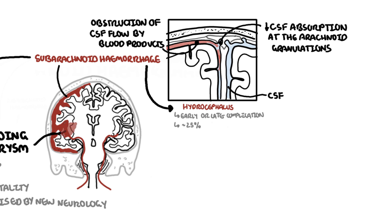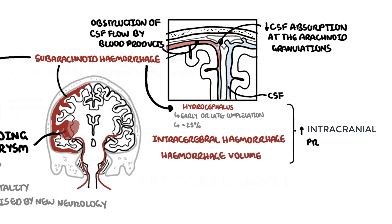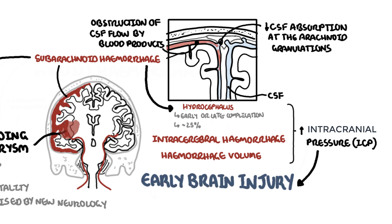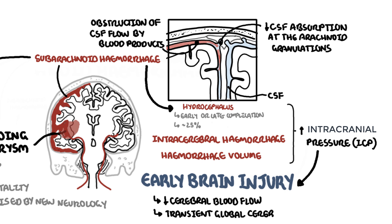Other immediate complications include intracerebral hemorrhage, and depending on the hemorrhage volume, this can lead to a significant increase in intracranial pressure. An increase in intracranial pressure means the pressure is elevated inside the cranium — the skull. When the pressure inside your skull and around your brain increases, it causes many complications. An increase in intracranial pressure leads to early brain injury due to reduced cerebral blood flow, causing what's called transient global cerebral ischemia.